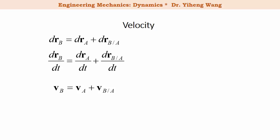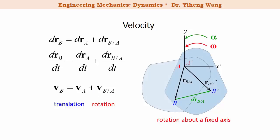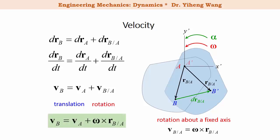The velocity of particle B has two contributions: vA represents the contribution from translation, and vB/A represents the contribution from rotation. From what we've learned about rotation about a fixed axis, the linear velocity of any point equals the cross product of omega and its position vector with respect to the center of rotation. Therefore, for a rigid body undergoing general plane motion, the absolute linear velocity of particle B is determined as the absolute linear velocity of particle A plus the cross product of omega — the angular velocity vector — and rB/A, the relative position vector of B with respect to A.